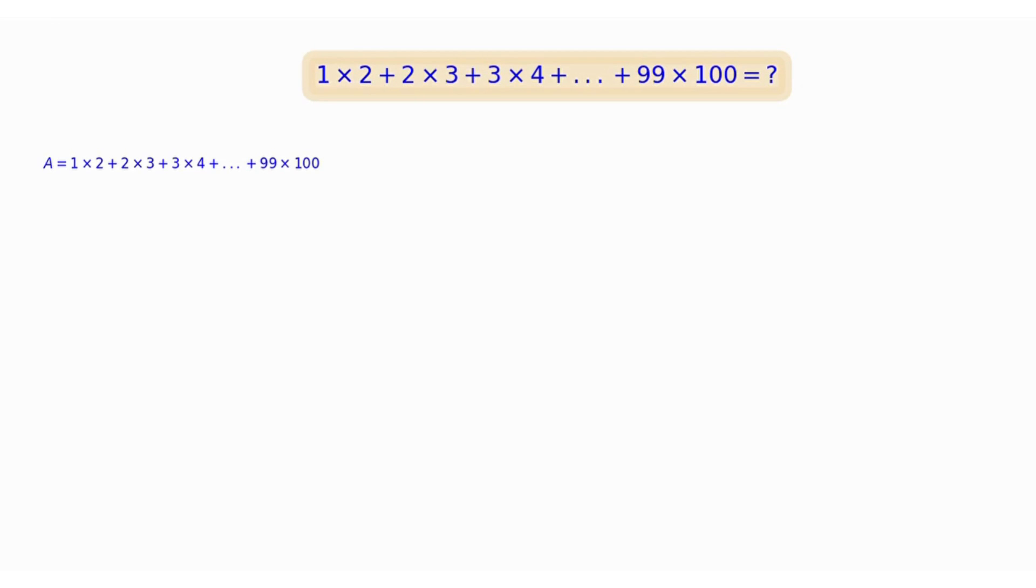Now multiply both sides by 3, we obtain this form. The idea of simplification lies in the last factor 3 of each product on the right-hand side.